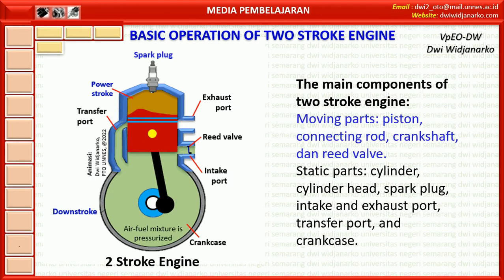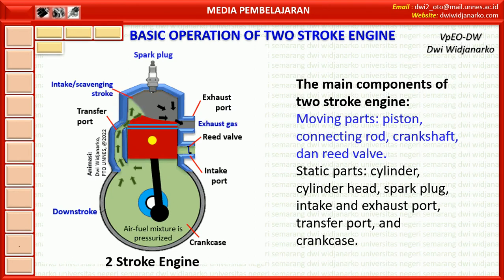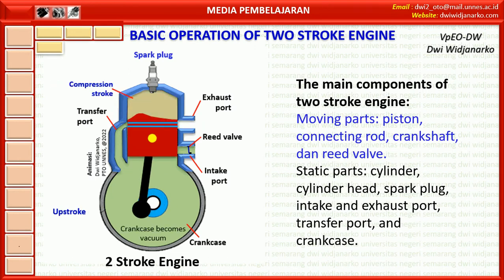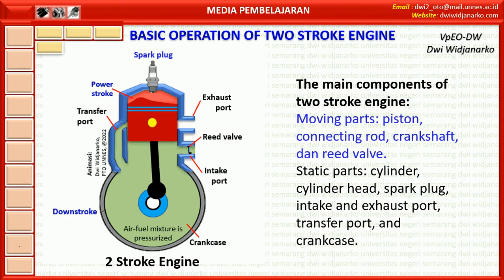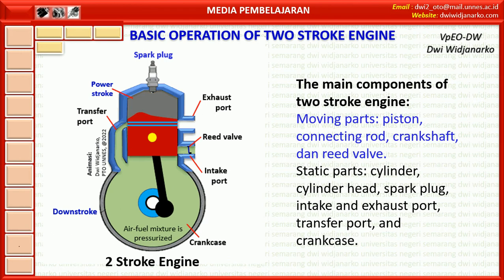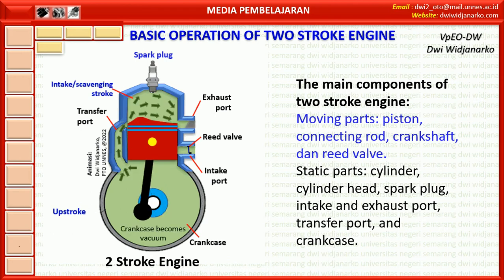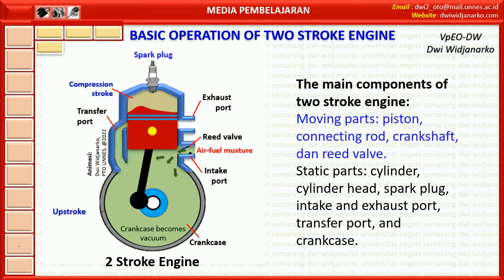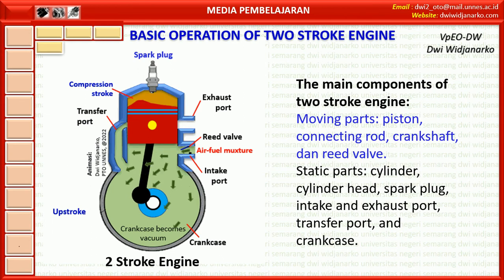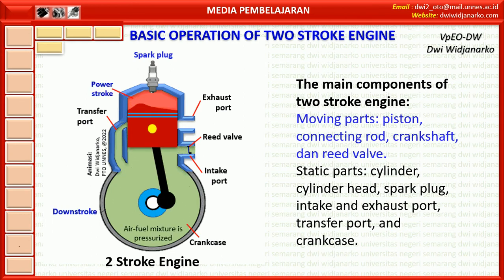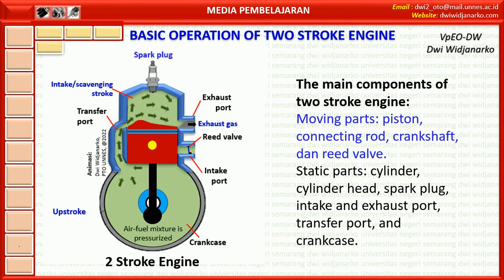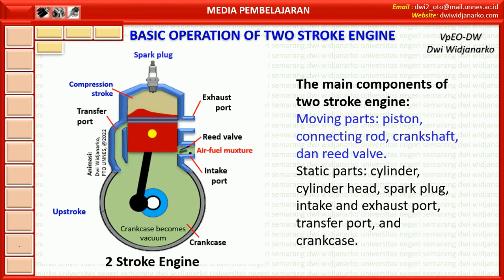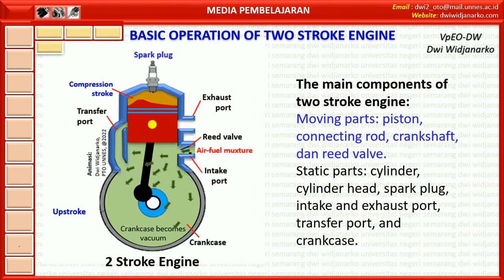What are the components of a two-stroke engine? Two-stroke engines have the same components as four-stroke engines. The main components include moving parts: piston, connecting rod, crankshaft, and reed valve. Static parts include: cylinder, cylinder head, spark plug, intake and exhaust port, transfer port, and crank case.